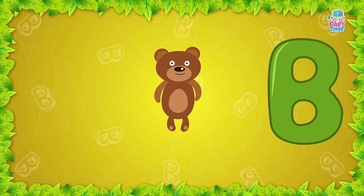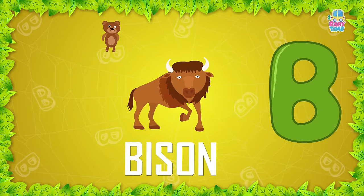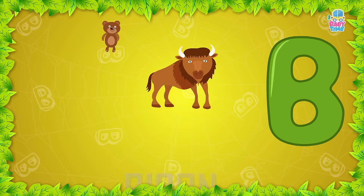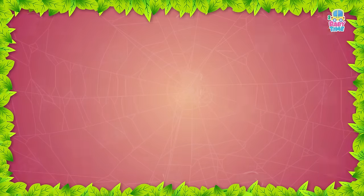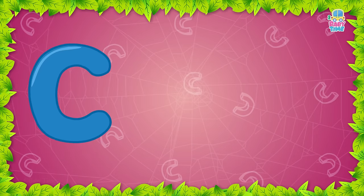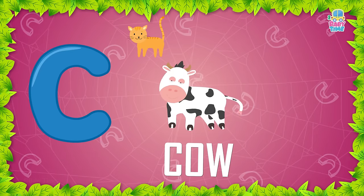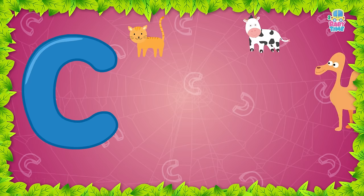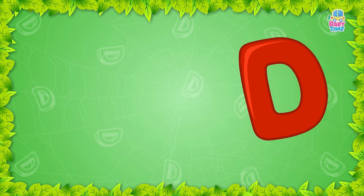What sound does B make? Look, there is B-B-Bear, B-B-Bison. Look, there is also B-B-Baboon. What sound does C make? Look, there is K-K-Cat, K-K-Cow. Look, there is also K-K-Camel.